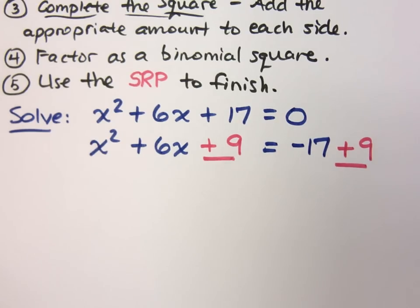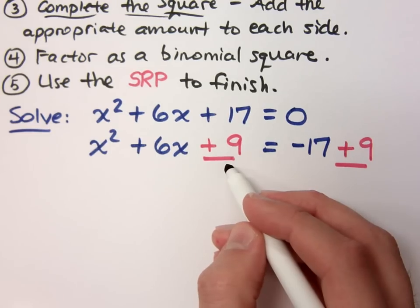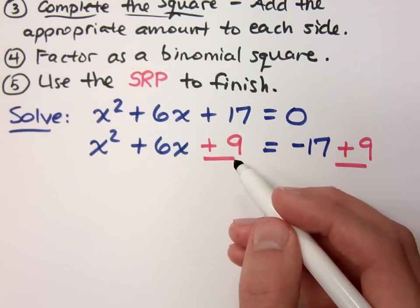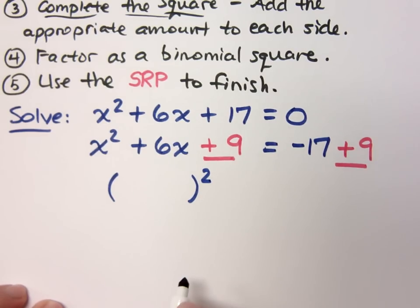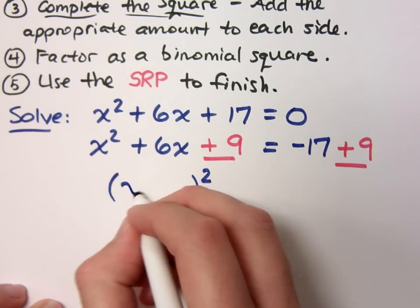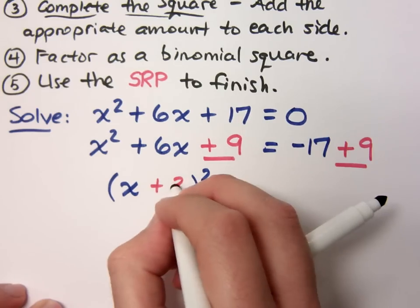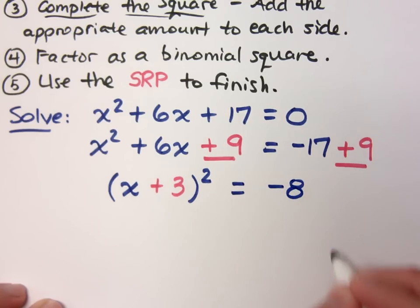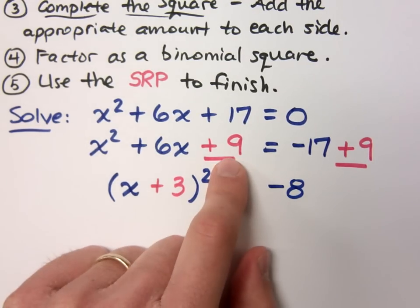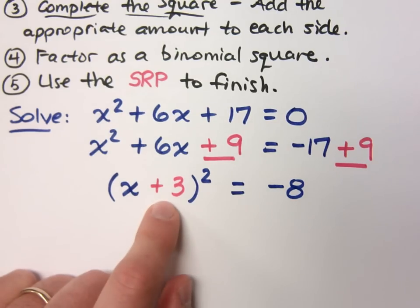But now we get into the whole series of questions about why we do what we do. Why did you want a nine here? Because I needed something to factor, but I wanted it to factor very specifically as a square, right? That's why I picked the nine. And how does this factor? X plus three? Yeah. Right. It factors as X plus three. We kind of just saw that, right? What about the other side of the equation? It's negative eight.